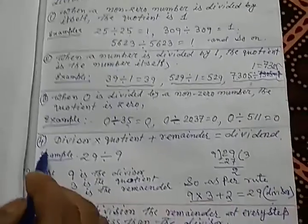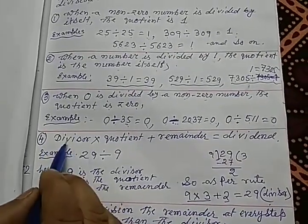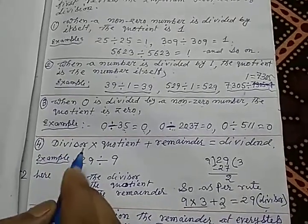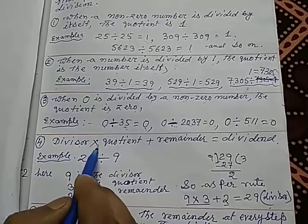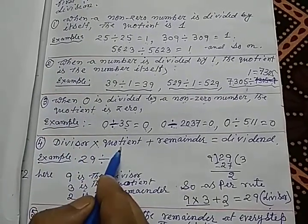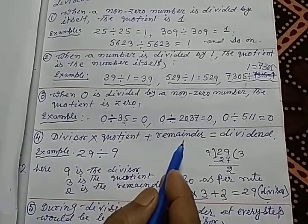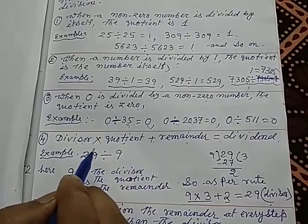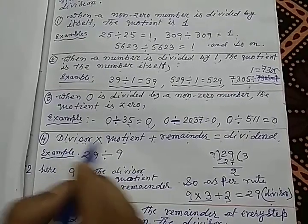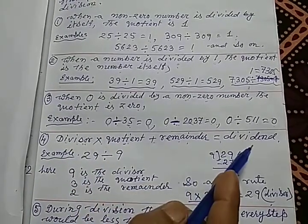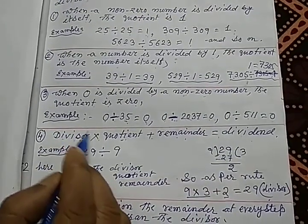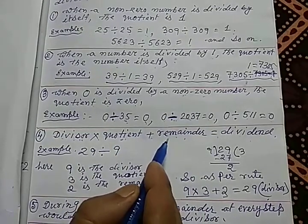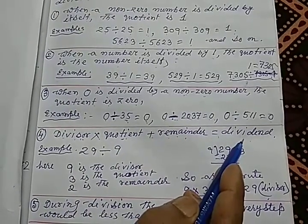Now the fourth rule — this is very important. This formula is used to verify the answer of a division: Divisor × Quotient + Remainder = Dividend. In division, there are four components: divisor, quotient, remainder, and dividend. If you multiply the divisor with the quotient and add the remainder, you will get the dividend.